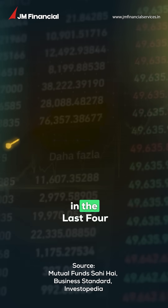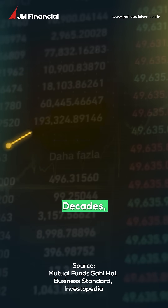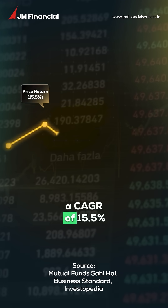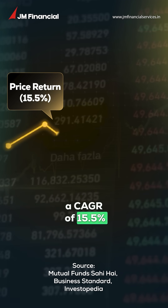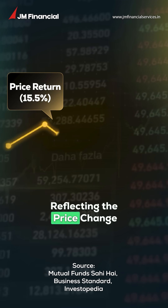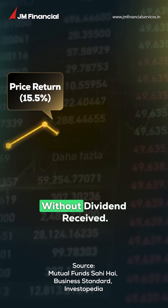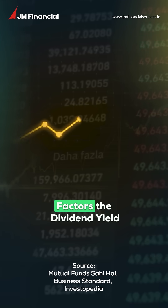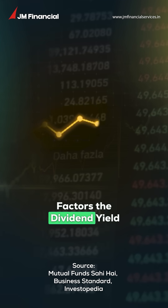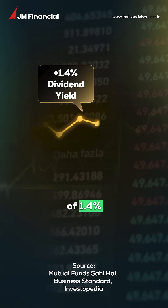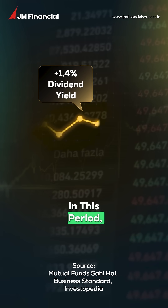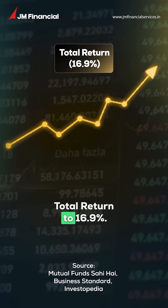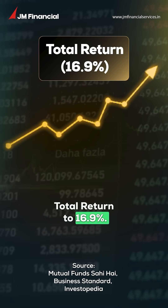For instance, in the last four decades, the Sensex delivered a CAGR of 15.5%, reflecting the price change without dividends received. The Total Return Index factors in the dividend yield of 1.4% in this period, taking the average annual total return to 16.9%.